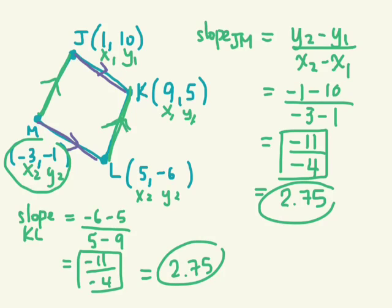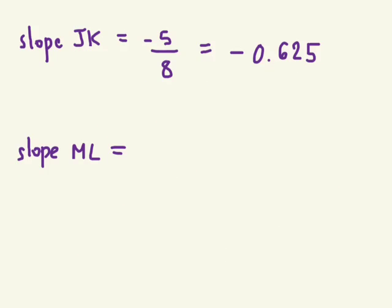So I know for sure that these two sides are parallel. We have to figure out if JK is parallel to ML. So you're going to do the exact same thing. Slope of JK is equal to negative 5 over 8, which is negative 0.625 as a decimal. What was the slope of ML?